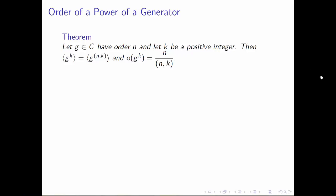That is, it tells us how many things are in that subgroup, and that's given by this formula. The order of g to the k is equal to n divided by—not by k, importantly—but by the greatest common divisor of n and k. We have to make sure that the divisor actually divides n, so we take the greatest common divisor of n and k.